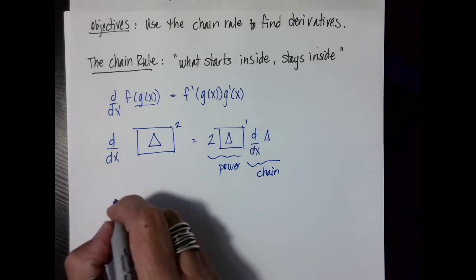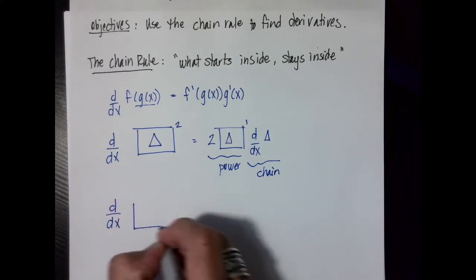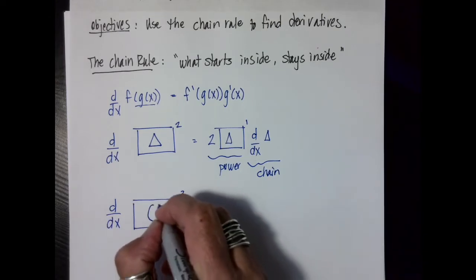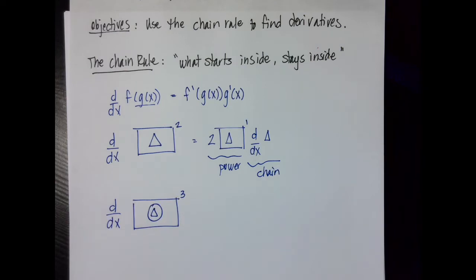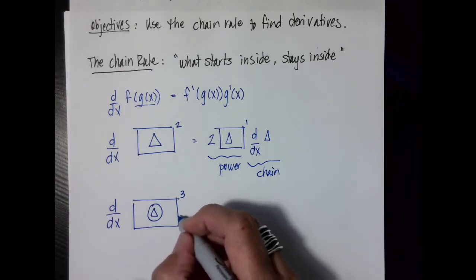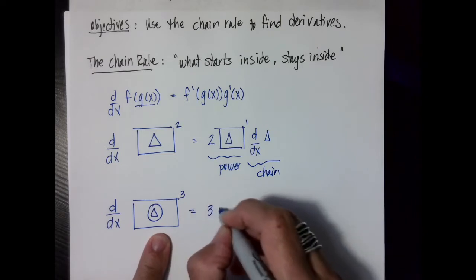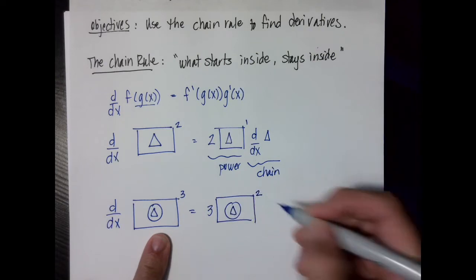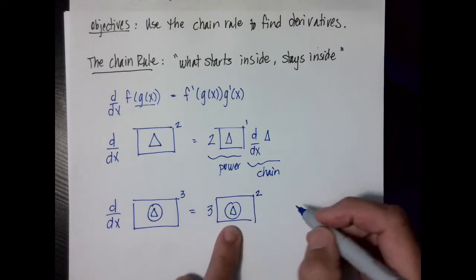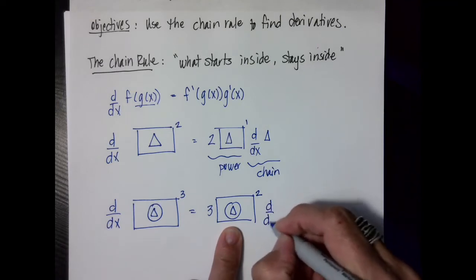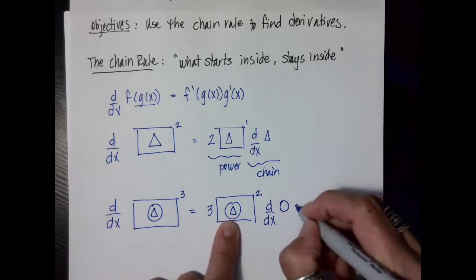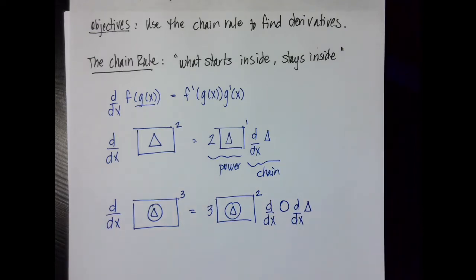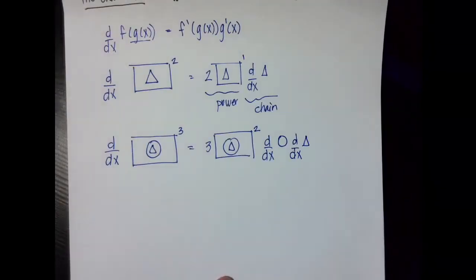Now let's do another one. Let's say I want to take the derivative — this time it's raised to the third power, but inside I have two things going on: a circle and a triangle. The first thing I'm going to manage is the outside rectangle, so this is going to be 3. Remember what starts inside stays inside, so those two guys are going to stay inside. The exponent decreases by 1. Then I'm going to take the derivative of the circle, and then I'm going to take the derivative of the triangle. Some of my students have said in the past that that is helpful.